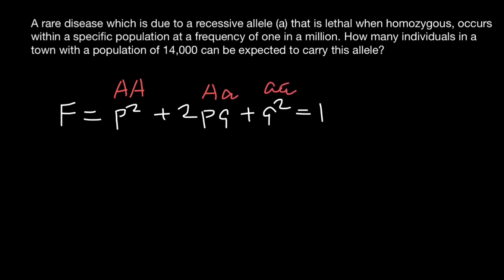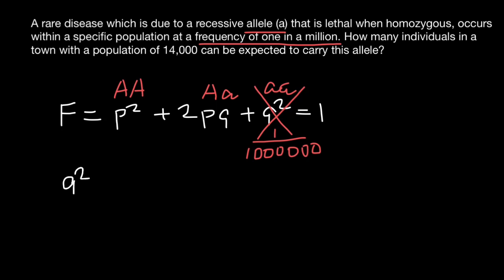According to our problem, recessive allele A occurs in a homozygous state at a frequency of one in a million. This allele in homozygous state is lethal — leading to stillbirth or spontaneous abortion — but this information still gives us the frequency of this recessive allele in the population. So q², which stands for the homozygous recessive genotype, equals 1/1,000,000.